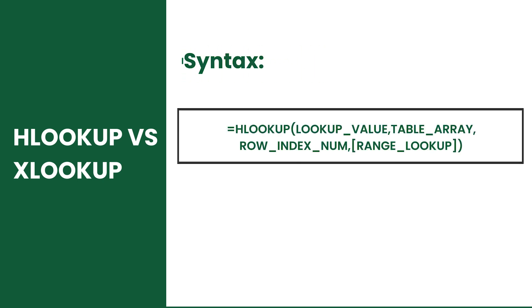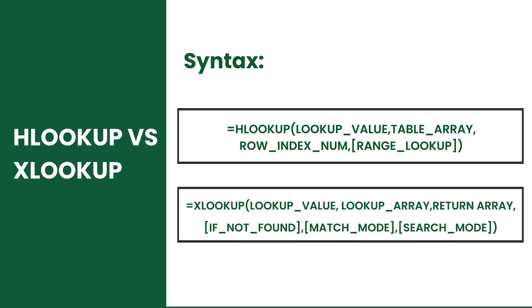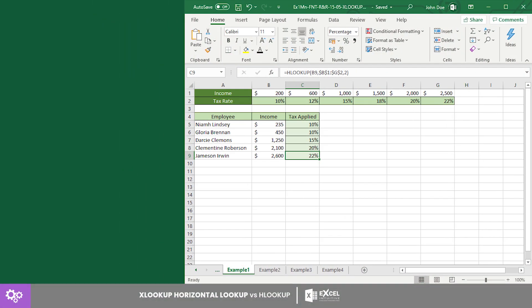Let's start with HLOOKUP. This function performs a horizontal lookup using four arguments, where the last one is optional. XLOOKUP, on the other hand, can perform either vertical or horizontal lookup using six arguments, where only the first three are required. Although HLOOKUP successfully delivers its purpose, some users are having problems with its flexibility.